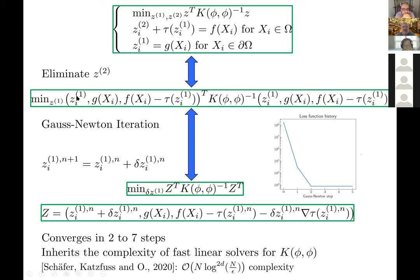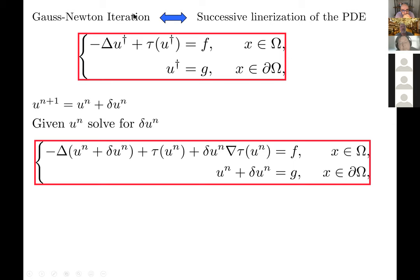To solve this unconstrained optimization problem we use a variant of the Gauss-Newton algorithm. This iterative algorithm successively linearizes the nonlinearity tau around the previous approximation and solves a quadratic optimization problem to get the next approximation. In practice, this Gauss-Newton algorithm converges in two to seven steps, meaning the complexity of our nonlinear solver inherits the complexity of inverting dense kernel matrices. This is equivalent to solving successive linearizations of the underlying nonlinear PDE combined with the kernel gamblet method for the linearized part.